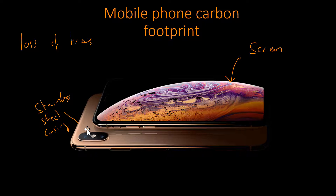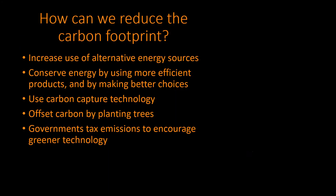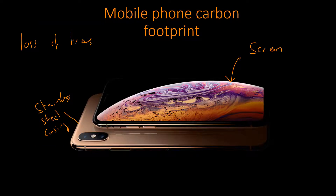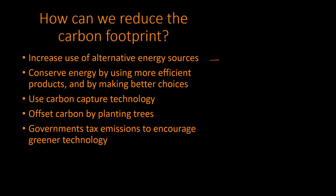There is a ton of things releasing CO2 into the environment, and that's just scratching the surface. You won't be asked to give a full breakdown of everything releasing CO2 — you can always think of more. So how do we reduce the carbon footprint? First, we increase the use of alternative energy sources. If we use solar power, for example, apart from the actual production of the panel, the running of solar power does not produce CO2, which would greatly reduce the carbon footprint.